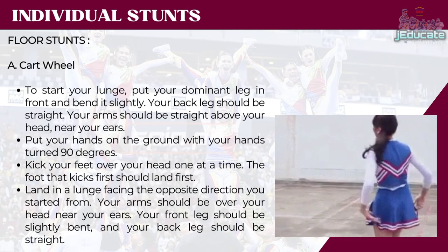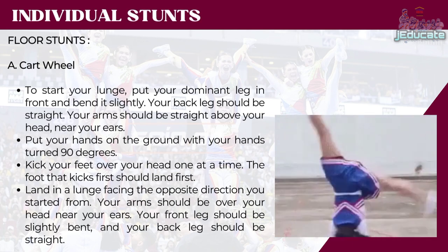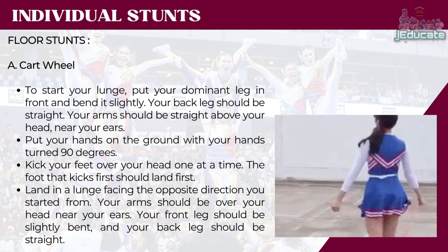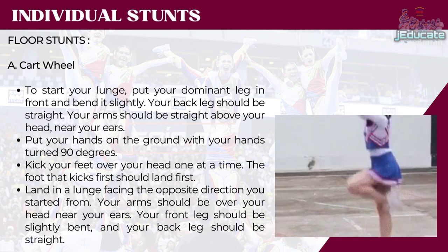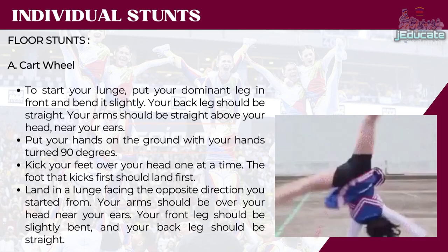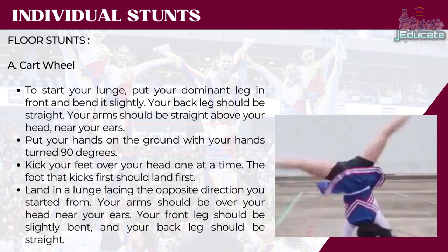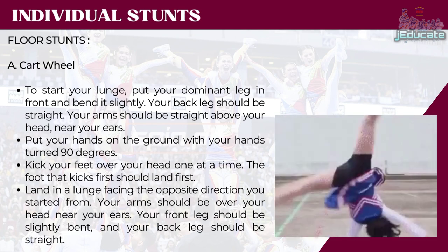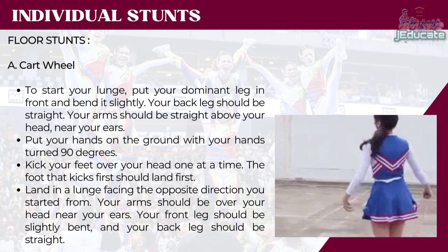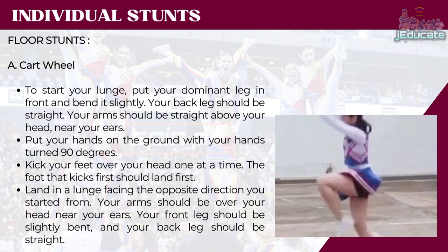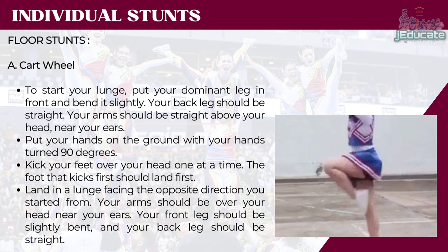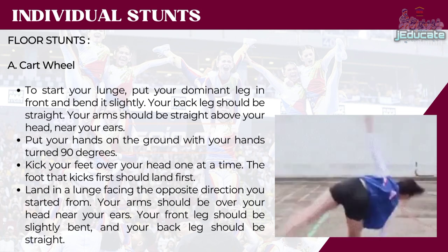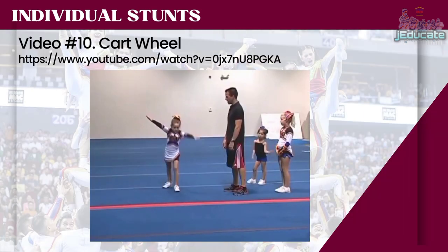Next category: floor stunts. Floor stunts include letter A, cartwheel. To start your lunge, put your dominant leg in front and bend it slightly. Your back leg should be straight. Your arms should be straight above your head near your ears. Put your hands on the ground with your hands turned 90 degrees. Kick your feet over your head one at a time. The foot that kicks first should land first. Land in a lunge facing the opposite direction you started from.